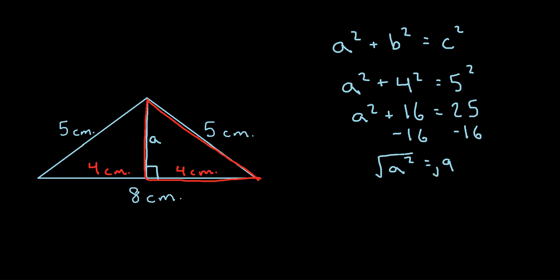And to solve for a, we can take the square root of each side. So we get a is equal to, the square root of 9 is 3. So the height of this triangle, let's write that right here. The height is equal to 3, and remember our units is centimeters.